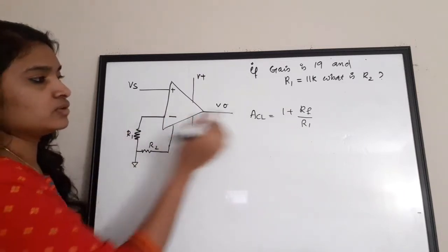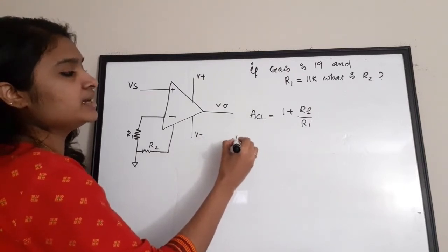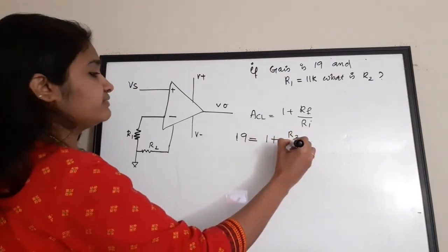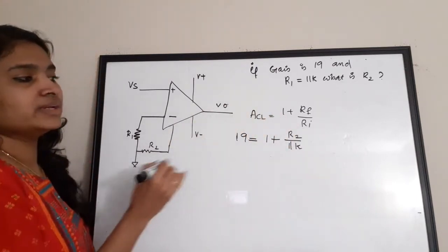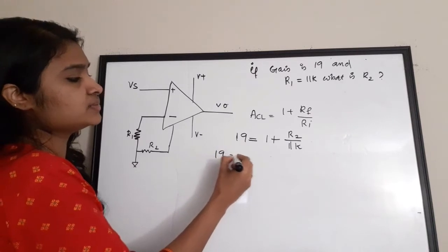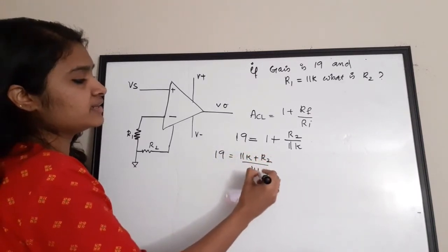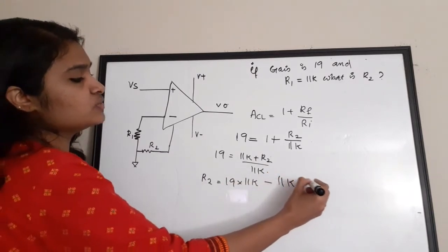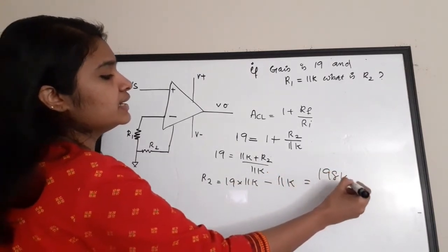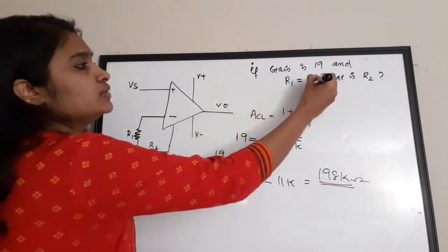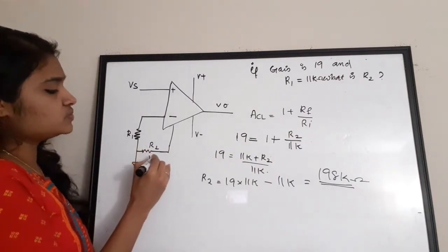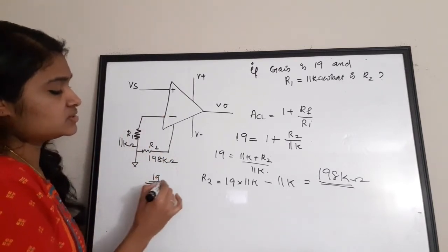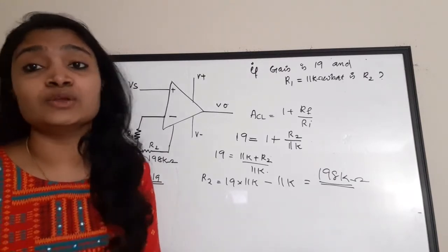Here Rf is R2 and Ri is R1. The gain is given as 19, so: 19 = 1 + R2/R1, which is 11kΩ. Solving: 19 = (11k + R2) / 11k, so R2 = 19 × 11k − 11k = 198 kΩ. The value of R2 is obtained as 198 kilo-ohms.